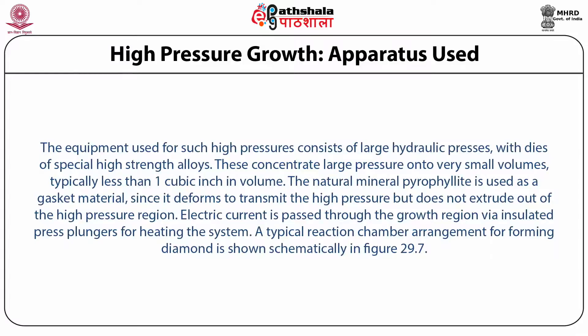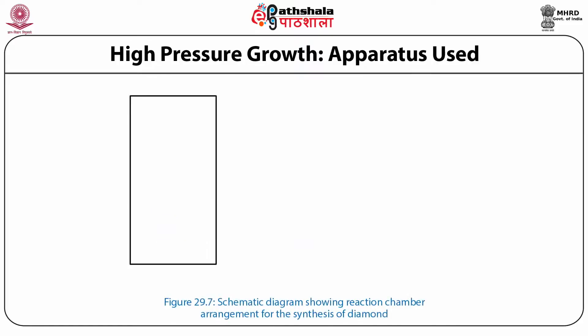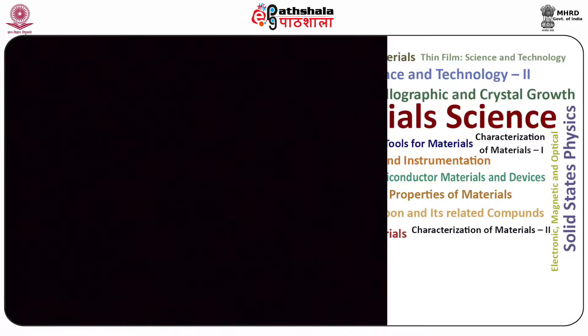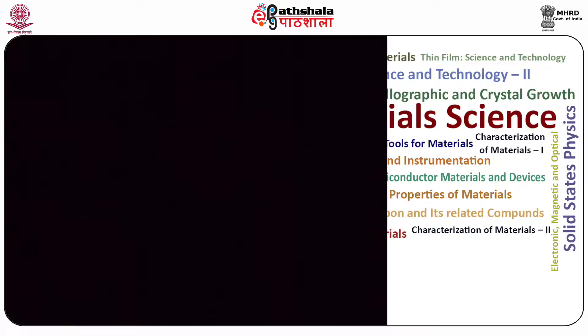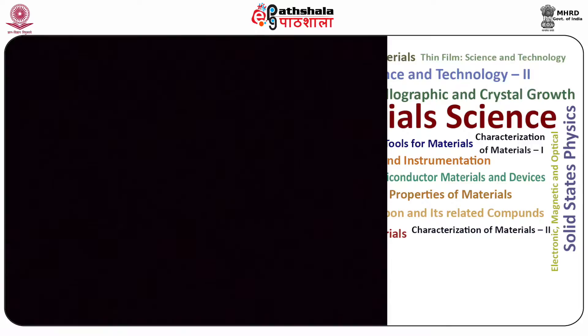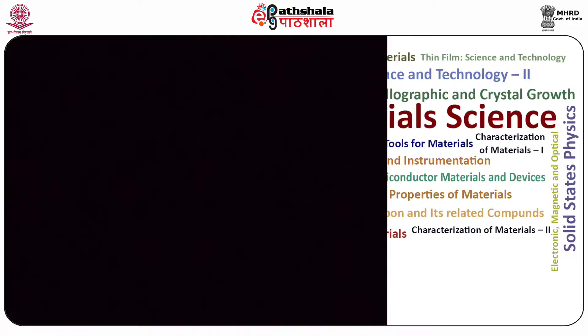The natural mineral pyrophyllite is used as a gasket material since it deforms to transmit the high pressure but does not extrude out of the high-pressure region. Electric current is passed through the growth region via insulated press plungers for heating the system. A typical reaction chamber arrangement for forming diamond is shown schematically in figure 29.7, which is a schematic diagram showing the reaction chamber arrangement for the synthesis of diamond.